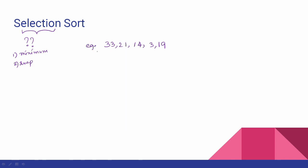In this algorithm, the elements are 33, 21, 14, 3 and 19. We start by finding the minimum element. The minimum element is 3. Then what do we do? The minimum element is swapped with the first element. So 33 and 3 are swapped. The result is: 3, 21, 14, 33, 19.